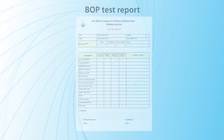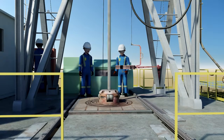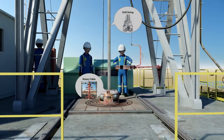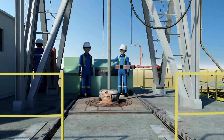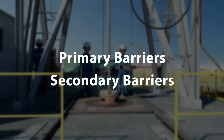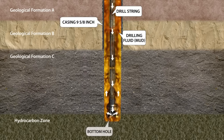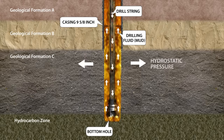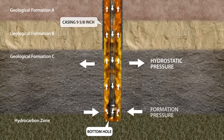Well control also covers the installation, repair, maintenance, and operation of surface well control equipment. It consists of well control barriers, which are divided into two groups: primary and secondary barriers. The primary well control barrier is the fluid column hydrostatic pressure, referred to as wellbore pressure, that provides overbalance against the formation pressure.